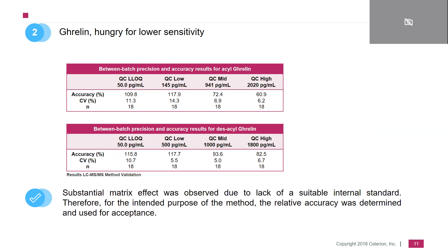Coming to the first results: the middle panel top shows between-batch precision and accuracy results for acyl ghrelin, and the lower panel for desacyl ghrelin. At the critical LLOQ level, the accuracy looks quite promising. It is a little less promising at the higher end, and this is due to a substantial matrix effect. Therefore, we decided to use relative accuracy instead of absolute accuracy, and this was deemed acceptable for the measurement of ghrelin in this human matrix.